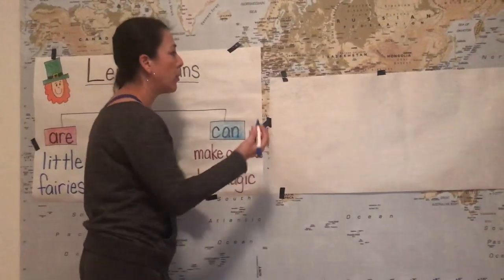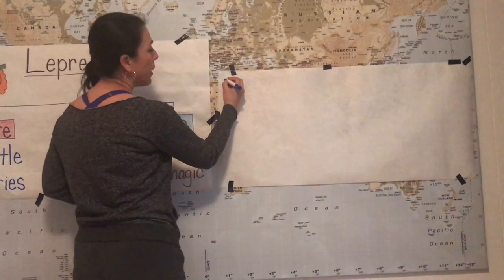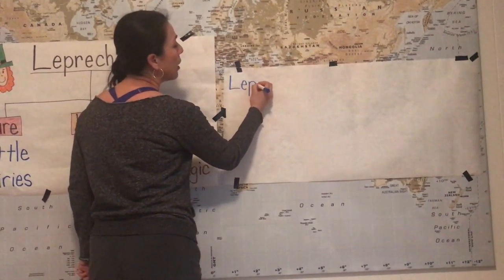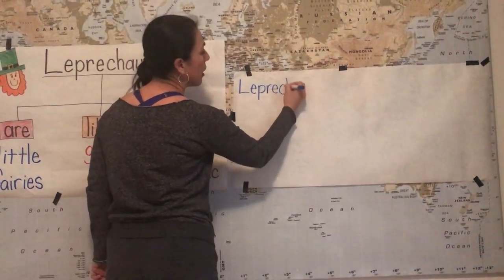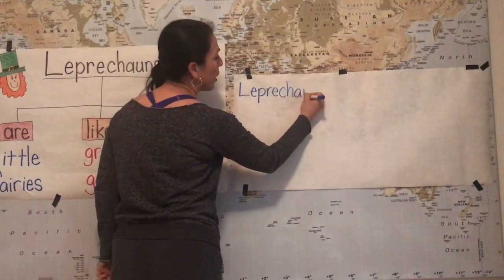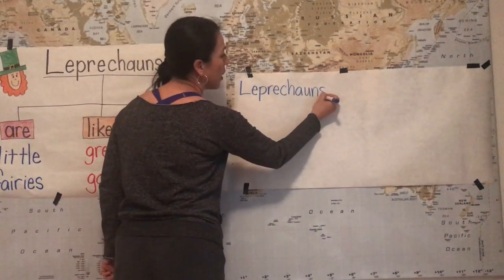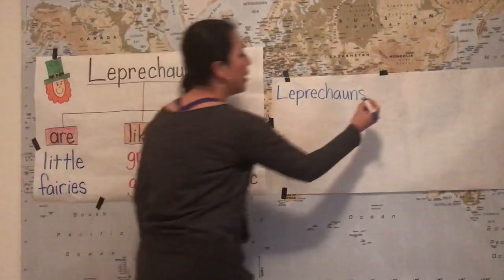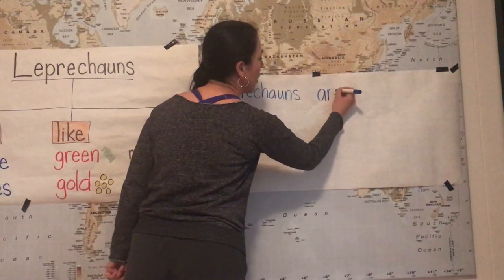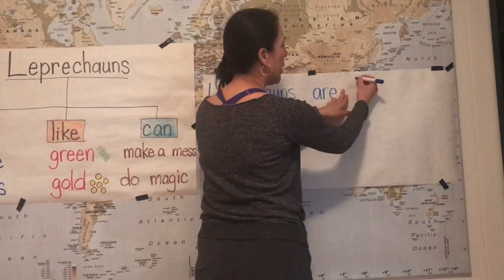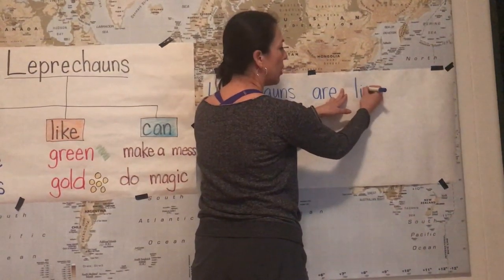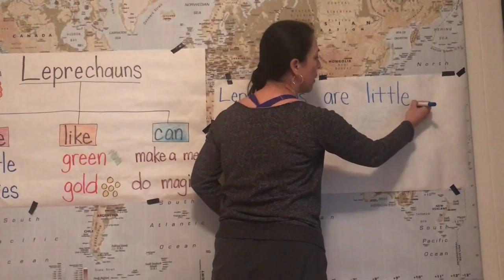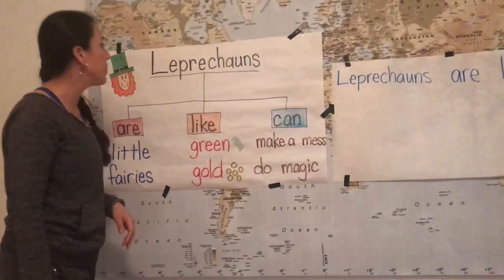I begin all the way to the left side with a capital letter. Leprechauns — fingerspace — are — fingerspace — little, and then a period. My next sentence is going to be 'Leprechauns like green or gold.'